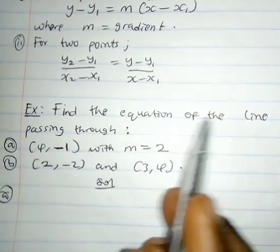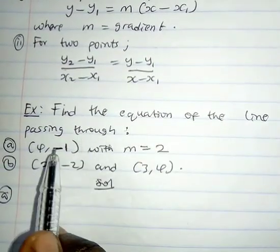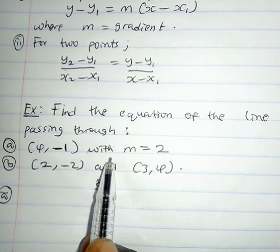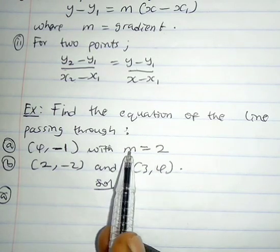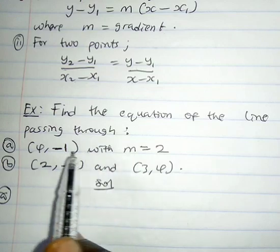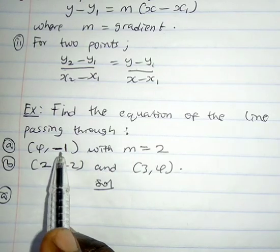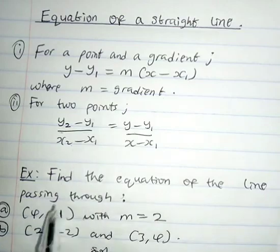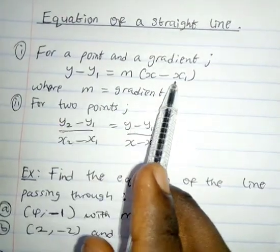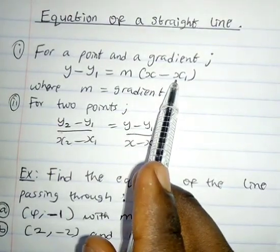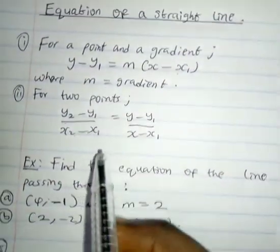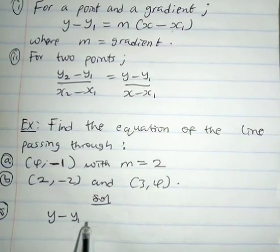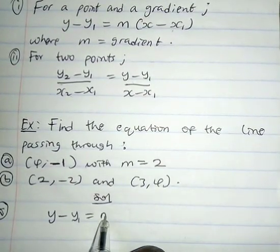For the first part: find the equation of the line passing through the point (4, -1) with m equals 2. Here m is the gradient and (4, -1) is the point given. The formula suitable for this question is the first formula, y minus y1 equals m times x minus x1.